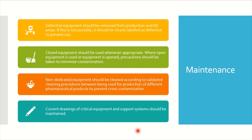Regarding maintenance, defective equipment should be removed from the production and QC area. If it is not possible to remove it, it should be clearly labeled as defective to prevent use. We have seen several 483 observations in this regard where equipment on the shop floor is not properly labeled as in-use or defective. It may happen that your equipment is large and you need to break a wall or isolate an area to remove it — that takes time, but you should properly label it so people do not operate a machine that can be hazardous. Closed equipment should be used whenever appropriate; where open equipment is used, precautions should be taken to minimize contamination.